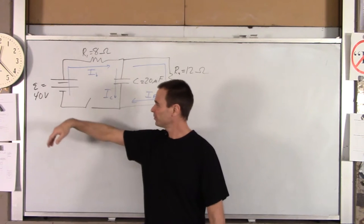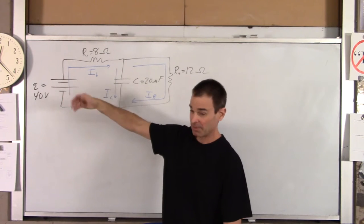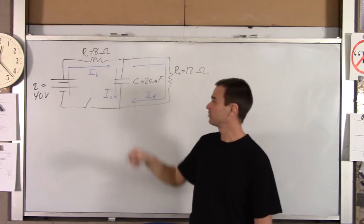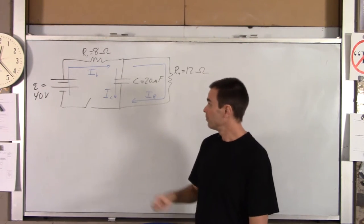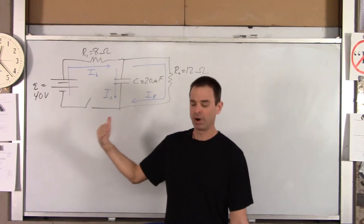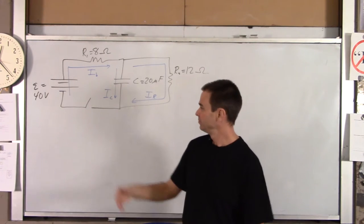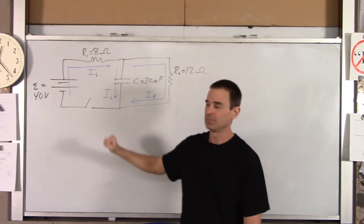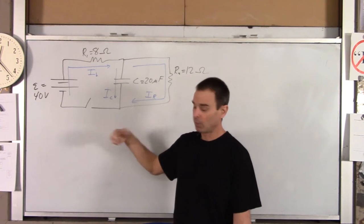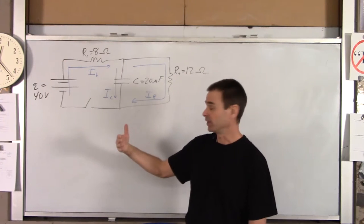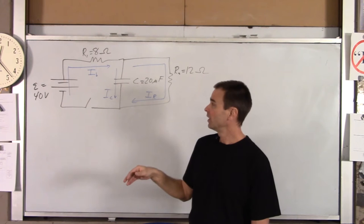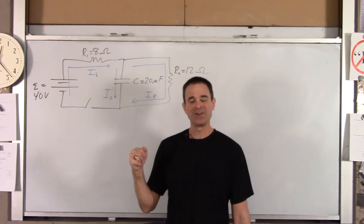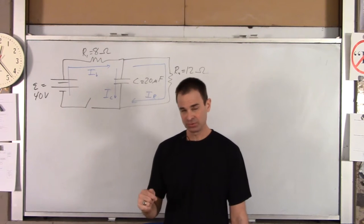We've got a battery — 40 volts — or an EMF source. We've got a resistor here, a resistor here, and a capacitor there. This problem has two parts. The first part is the long part, the second part is really short. The first part is we're going to close this switch, and what I want us to figure out is the following: we're going to find all three currents at the moment you close the switch, after a long long time, and as functions of time.